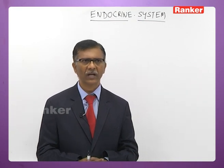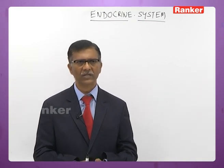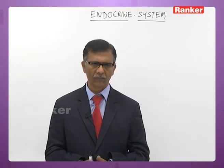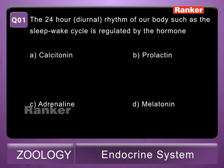Here is the first question. The 24-hour diurnal rhythm of our body, such as the sleep-wake cycle, is regulated by the hormone: A - calcitonin, B - prolactin, C - adrenaline, D - melatonin.